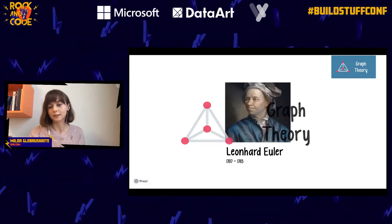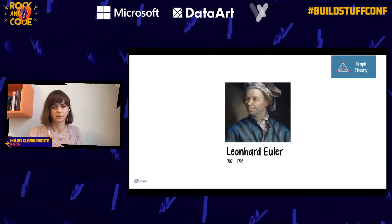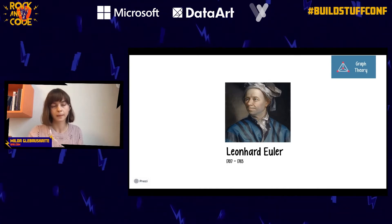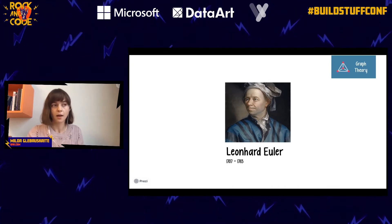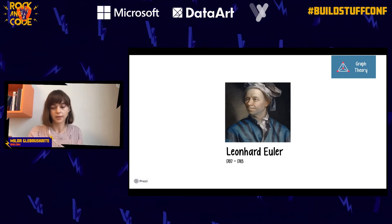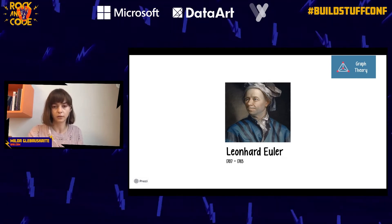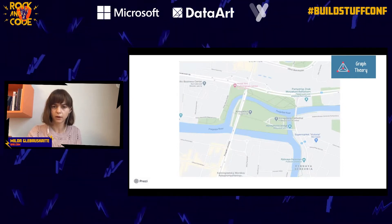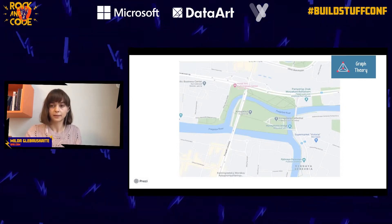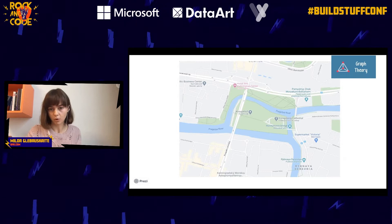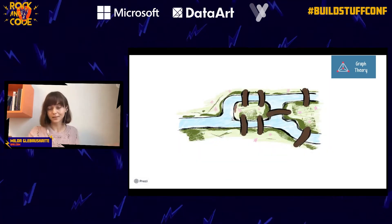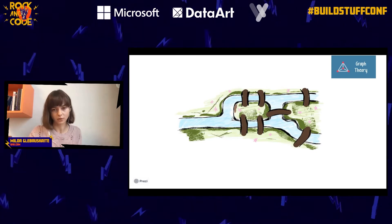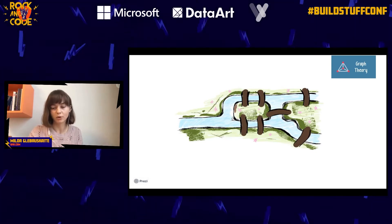The first ever person to represent a real-life problem as a graph was the creator of graph theory himself — Leonhard Euler. He was a very famous mathematician who lived in the 18th century and spent a lot of his time in Prussia, in Königsberg — which is the current Kaliningrad. Back in the day, people didn't have much exciting things to do, so they went on walks and created games.